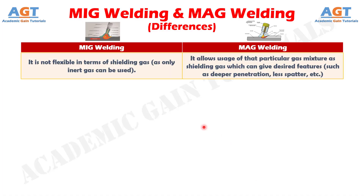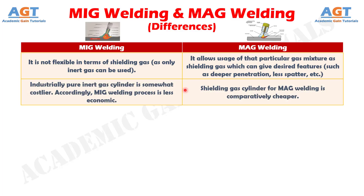Number five: MIG welding is not flexible in terms of shielding gas, as only inert gas can be used. Whereas, MAG welding allows usage of a particular gas mixture as shielding gas which can give desired features such as deeper penetration, less spatter, etc.